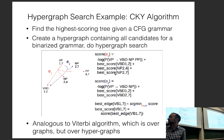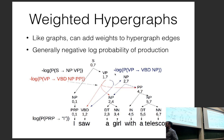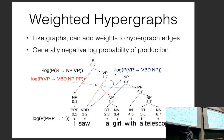A student asks how to calculate the score for a given production rule. The simple method is count and divide from a supervised training corpus: if VP → VBD NP appears 10% of the time, the score is the negative log of 0.1. The remaining 90% corresponds to other productions.